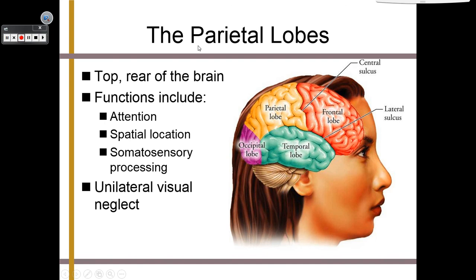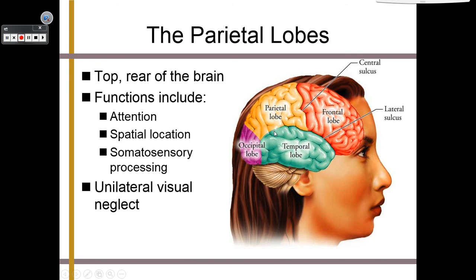The parietal lobes are at the top back part of your skull. Their functions include paying attention, spatial location, and somatosensory processing — understanding what your senses are telling you. Information from your occipital lobe for visual stuff goes to your parietal lobe to figure out where or what something is. One condition associated with parietal lobes is unilateral visual neglect — when you see something but don't really pay attention to it. That's the basis of the expression 'if it was a snake it would have bit me.'